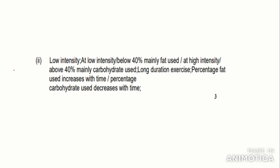Looking at the mark scheme: low intensity, or below 40% VO2 max, mainly fat is used — which we wrote. Or the converse: at high intensity or above 40%, mainly carbohydrates used. It doesn't matter which one you put, you just need to get the idea. And long duration exercise is recommended, which we wrote. Percentage fat used increases with time — which we wrote as well — so we get all three marks. They also accept the converse: percentage carbohydrates used decreases with time. So you would get three marks for that question.